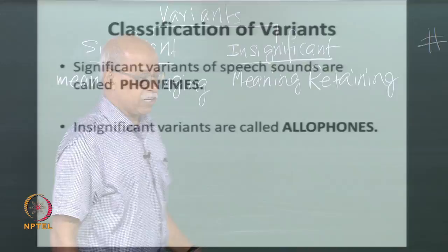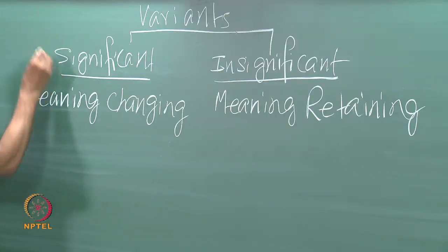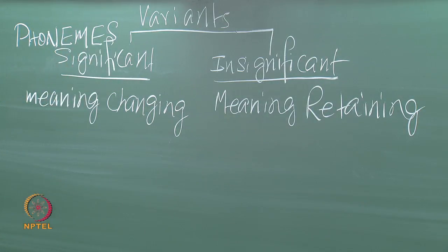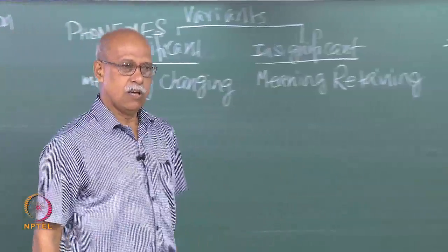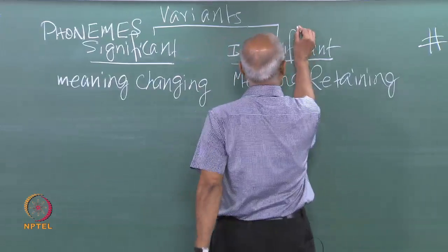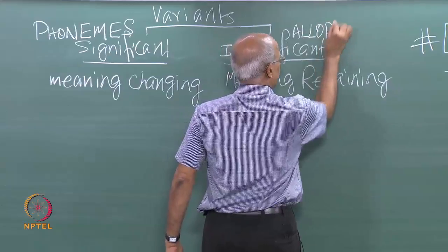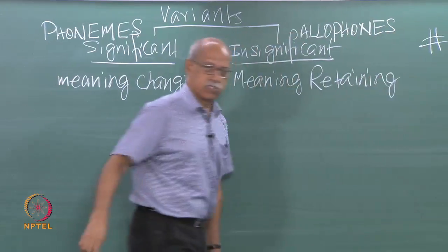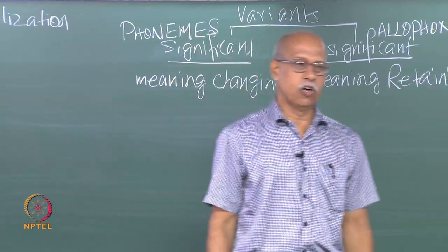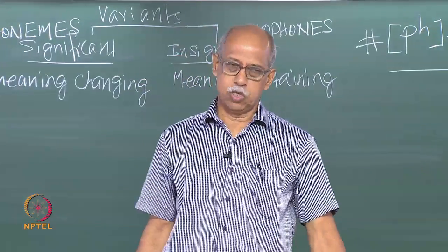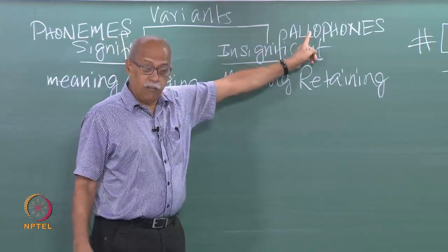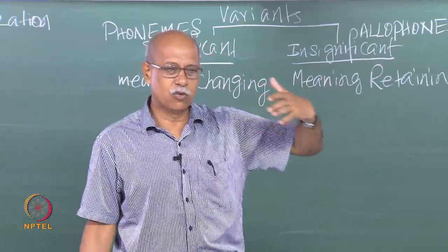Significant variations have a technical name: these variants are called phonemes — individual, discrete sounds. 'Phon' is sound, 'eme' is discrete. And insignificant variants are called allophones — 'allo' means 'like', so allophones are like sounds, similar sounds. These are discrete sounds versus variants of the same sound. A lot of scientific terminology in Europe comes from Greek and Latin, just as we draw from Sanskrit.